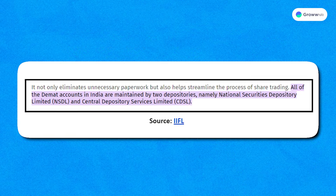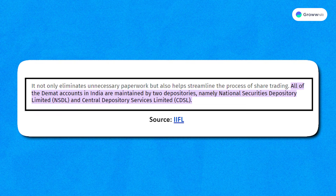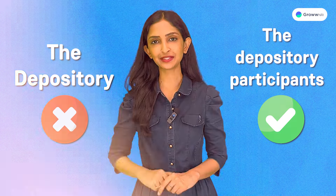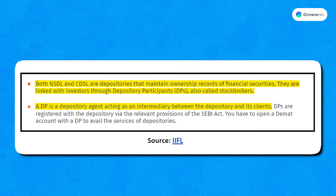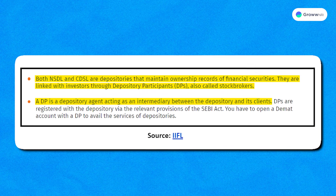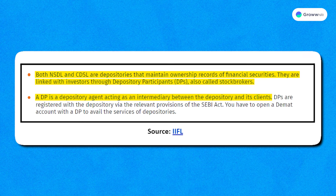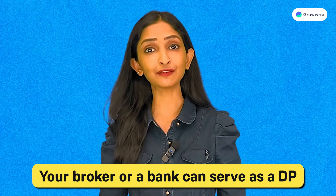Two principal depositories — the National Securities Depository or NSDL and Central Depository Services Limited or CDSL — maintain DMAT accounts in India. However, these accounts are managed not by the depository directly, but by depository participants. The depository holds and maintains securities in electronic form, while depository participants or DPs are intermediaries offering DMAT account services to investors. In the Indian context, your broker or a bank can serve as a DP. To open a DMAT account with either NSDL or CDSL, individuals need to approach a DP.